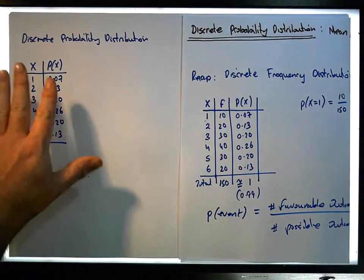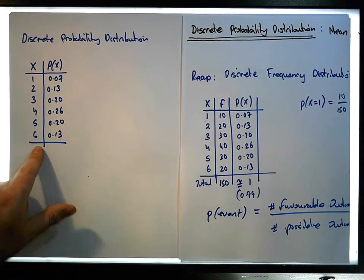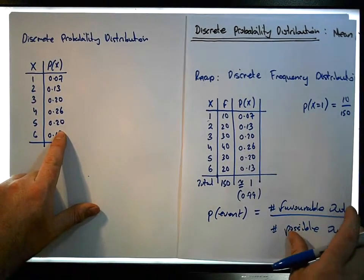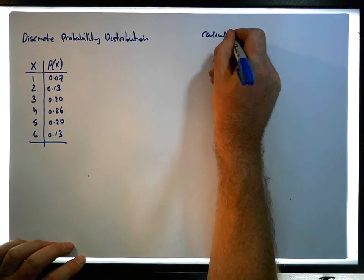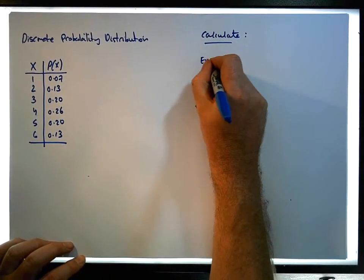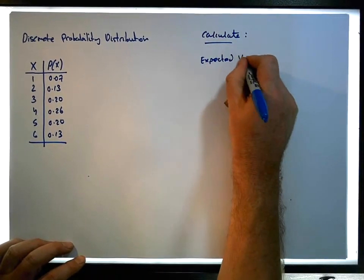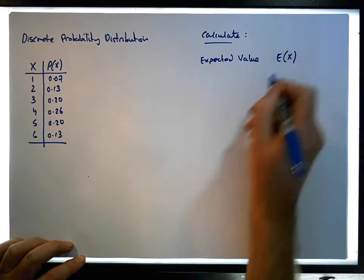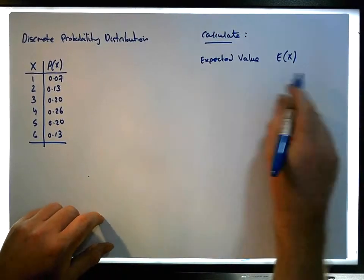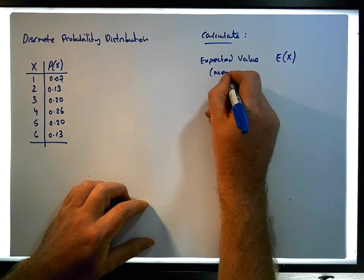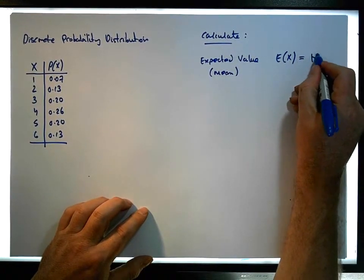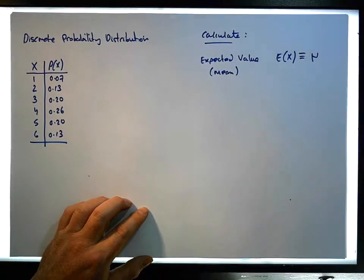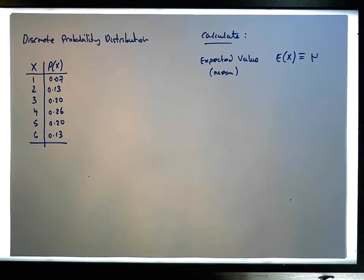All we're presented with is the discrete outcomes along with their probabilities, and what we want to calculate is the expected value, symbolized by E(x). The expected value is also known as the mean, and E(x) is equivalent to μ, the population mean.